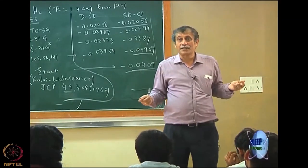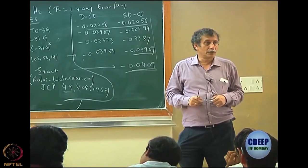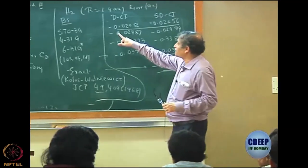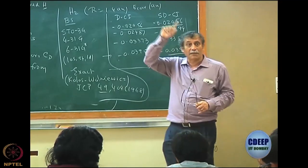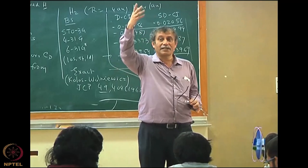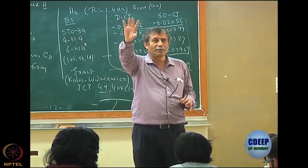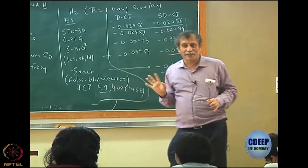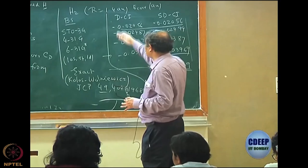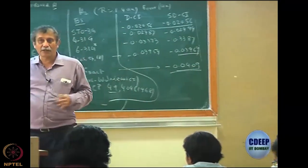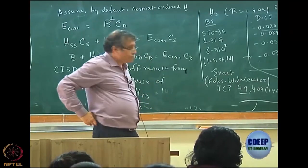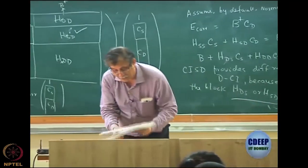Note that in the correlation energy, there is a negative sign everywhere because of the definition: E₀ minus E_Hartree-Fock. If you define it as E_Hartree-Fock minus E₀, they become positive — but that causes a sign change in all equations. We stick to this definition, so all correlation energies should have a negative sign; you cannot have a positive correlation energy.